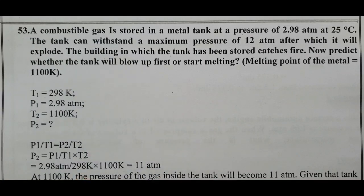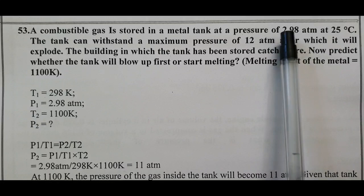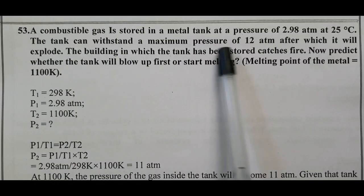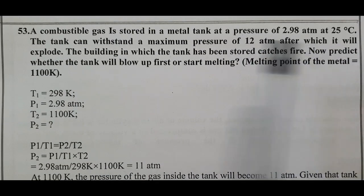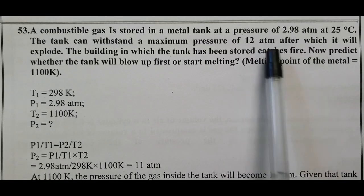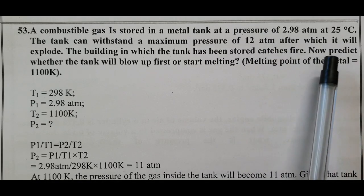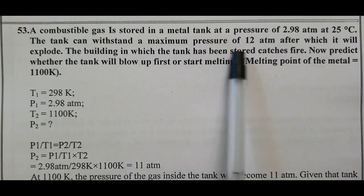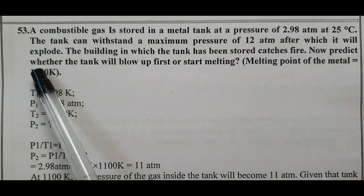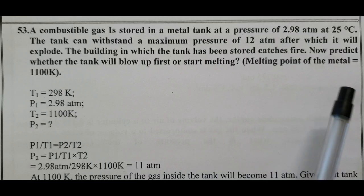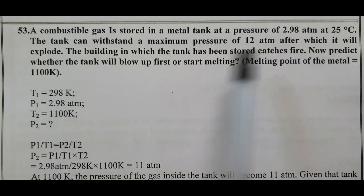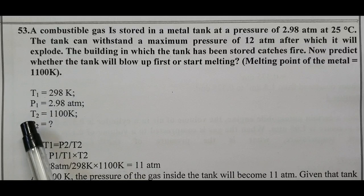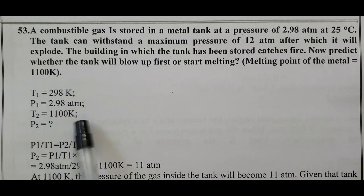A combustible gas is stored in a metal tank at a pressure of 2.98 atm at 25 degrees Celsius. The tank can withstand a maximum pressure of 12 atm after which it will explode. Predict whether the building in which the tank has been stored catches fire. Predict whether the tank will blow up first or start melting. Melting point of metal equals 1100K. T1 equals 25 degrees Celsius, which is 298 Kelvin. P1 equals 2.98 atm. T2 equals 1100 Kelvin. P2 equals what?